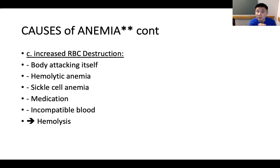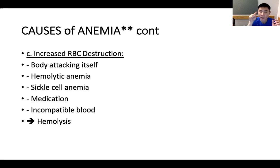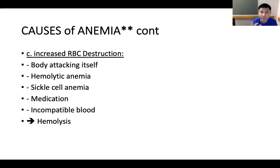Another cause of anemia is increased red blood cell destruction. This occurs when the body attacks its own red blood cells — hemolytic anemia — where the cells are broken down. Sickle cell anemia occurs when the cells get a concave shape and can no longer carry oxygen, making them essentially useless. Medications can also cause red blood cell destruction, as can incompatible blood transfusions, which can lead to hemolysis.